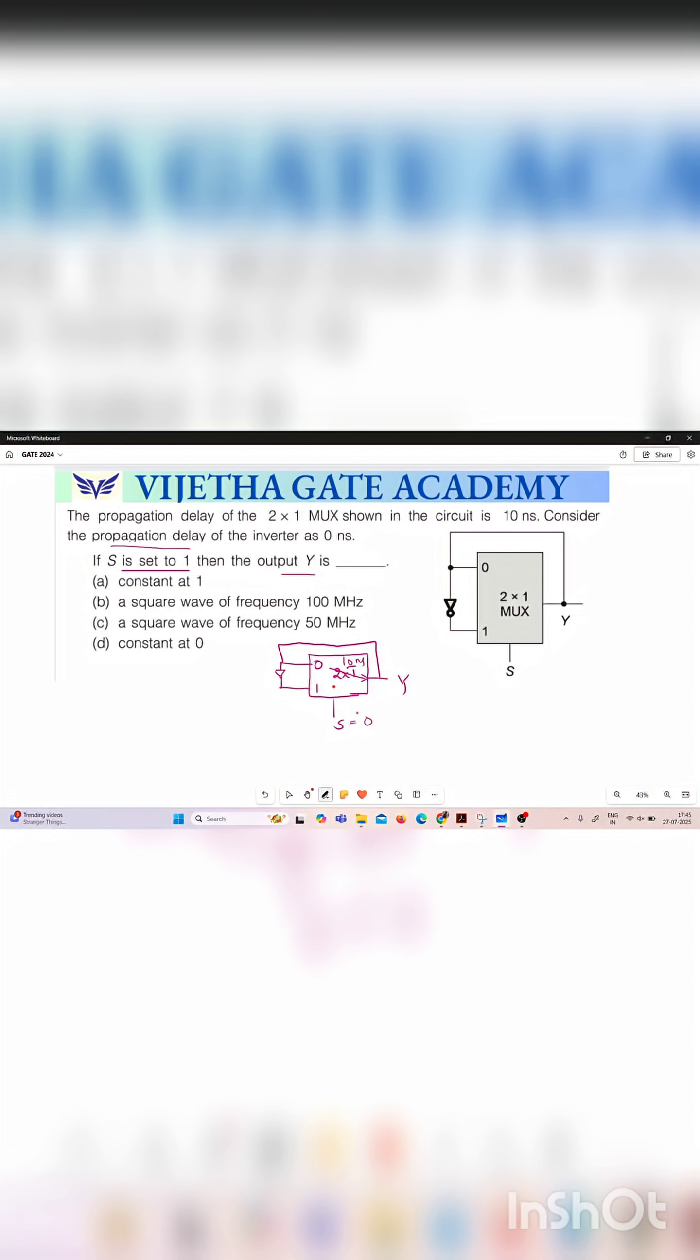But if selection line is equal to 1 then whatever the input that is present at this input will be connected to the output. Okay now here s is always set to logic 1 then what is the output you are getting? Here there is a feedback from the output y.